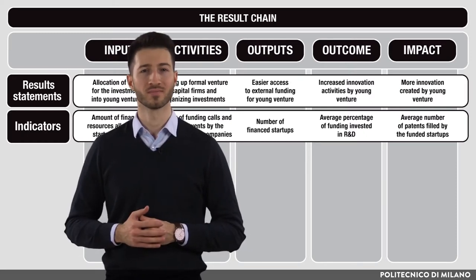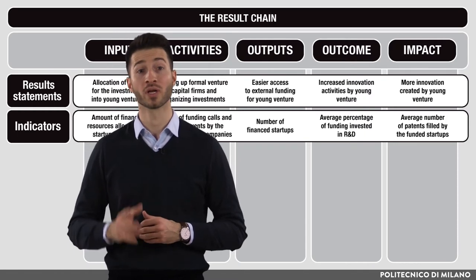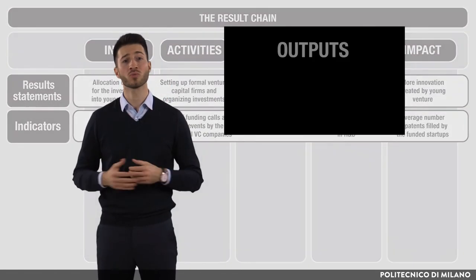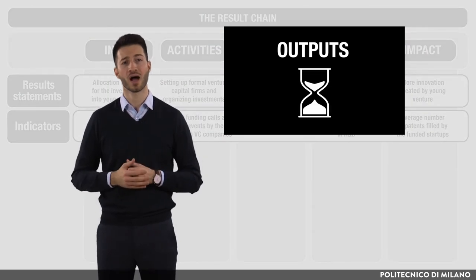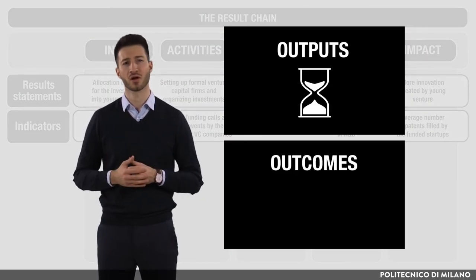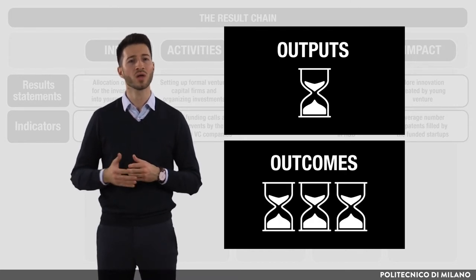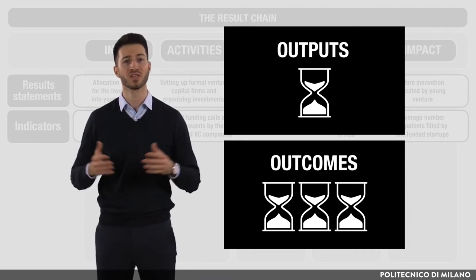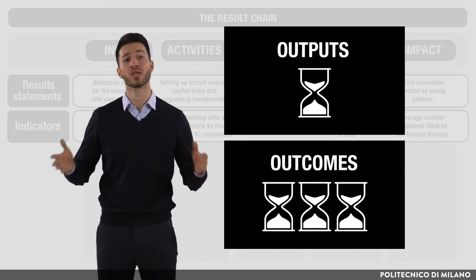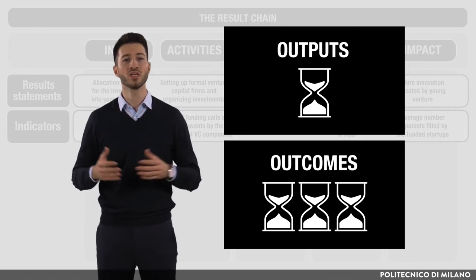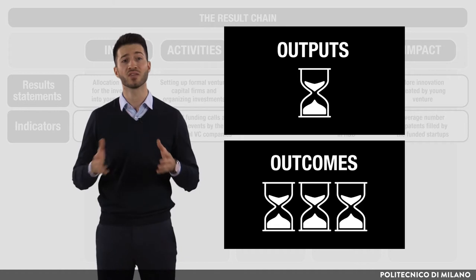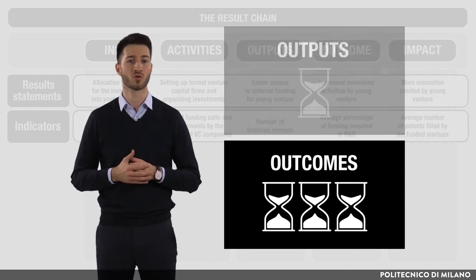One more important point: the policy implementation process is commonly complex and long. For instance, while the outputs can be achieved in the short term, the outcome — such as in our case startups increasing their investments in R&D — can take one to three years, while we can hope that the intended impact of the reform on the innovative output of the startups will materialize in the span of three or even five years. We need to keep the timeframes in mind when monitoring the implementation and decide the frequency of measuring the indicators accordingly.